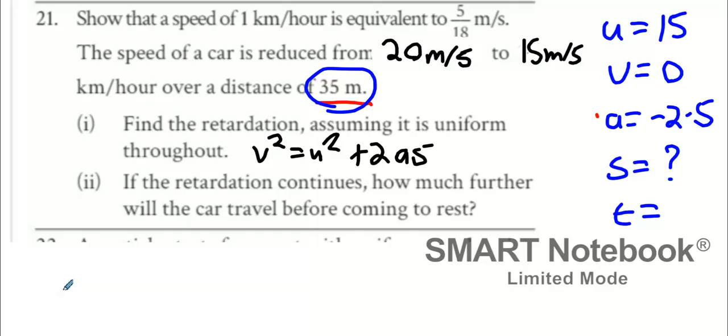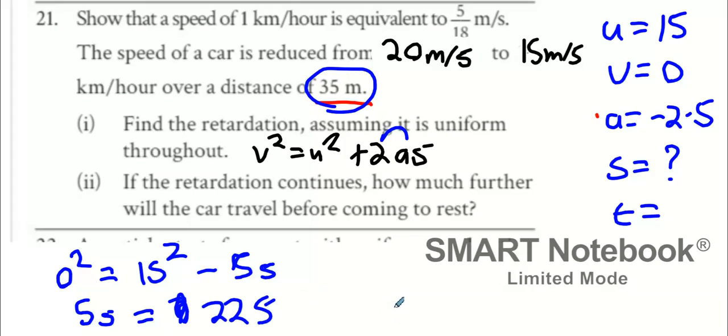So we go for v squared, which is 0 squared. U squared is 15 squared. 2 times a is minus 5s. Making the s small in comparison to my 5 because they look very alike. And then I'm just going to get 5s equals, what's 15 squared? 225. S will say it is. And then, who got an s value of 45? How many else got 45 meters? Travel an extra 45 meters.